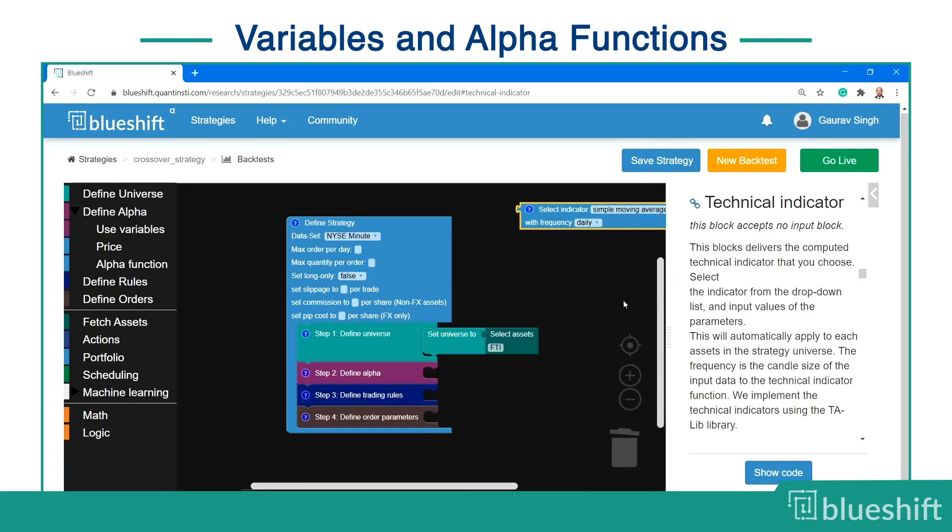A good practice would be to give a name to this computation. You can call it short-term MA. In coding jargon, short-term MA is the variable. In other words, variables store information and you can access this information by the name of the variable.